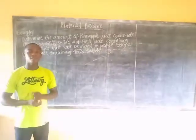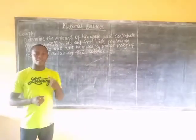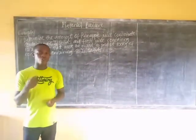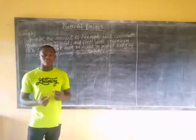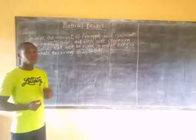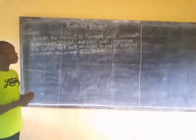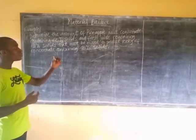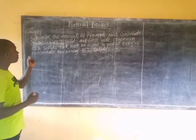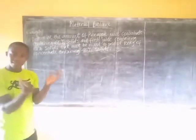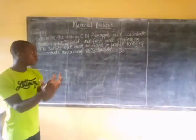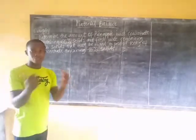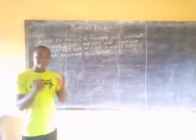Welcome to my YouTube channel. In today's video of Danny Foodtech edition of Food Engineering, we are going to consider a material balance problem. The problem says: determine the amount of pineapple juice concentrate containing 65% solids and fresh juice containing 12% solids that must be mixed to produce 100 kg of concentrate containing 25% solids. This question is a mixing question.